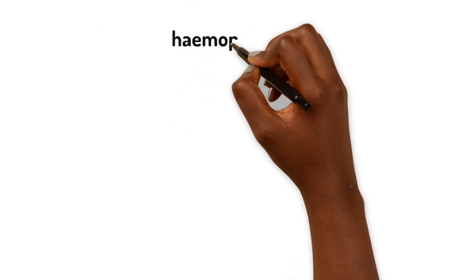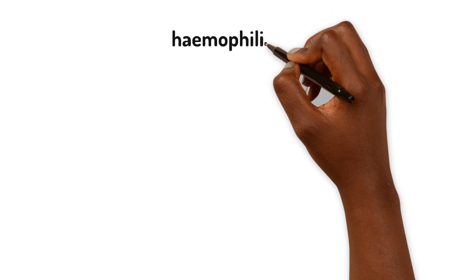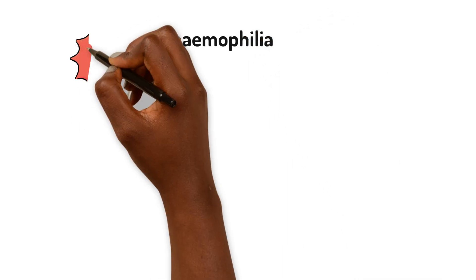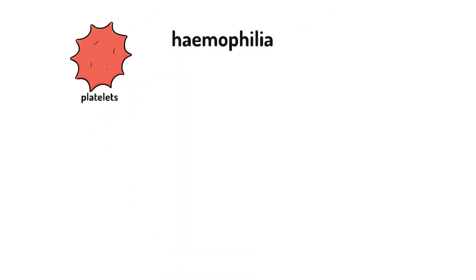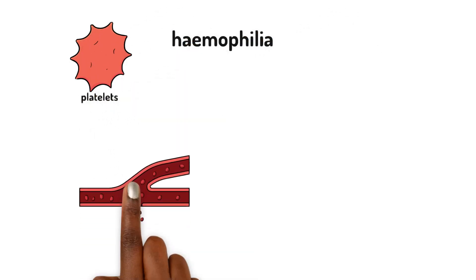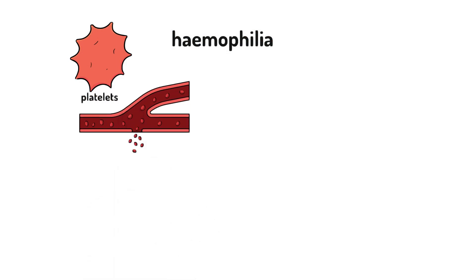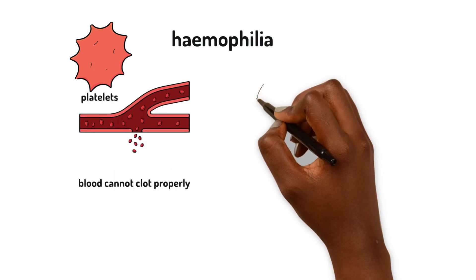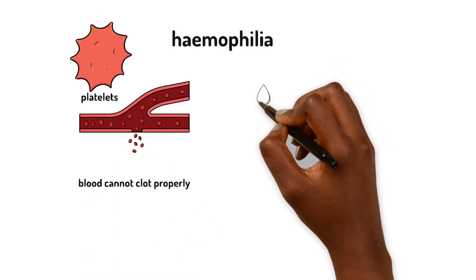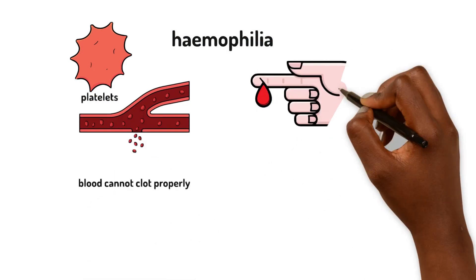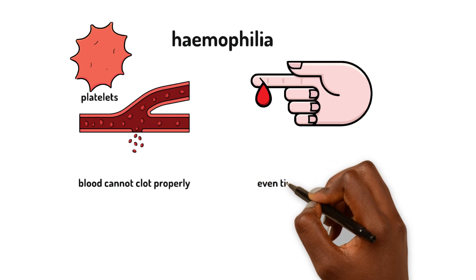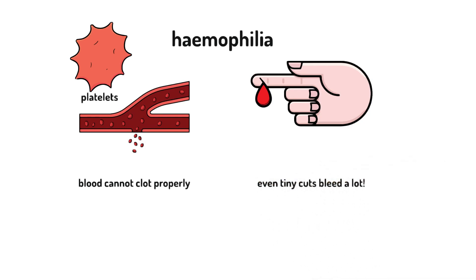Now let's look at haemophilia, a disorder of the platelets. This means that blood cannot clot properly, so even a tiny cut can result in a lot of bleeding.